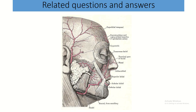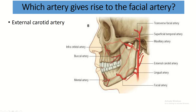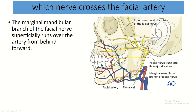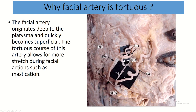Related question: which artery gives rise to the facial artery? The external carotid artery — this is the external carotid artery and this is the facial artery; it arises a little above the lingual artery. Which nerve crosses the facial artery? The marginal mandibular branch of the facial nerve, which runs superficially over the artery from behind forward.